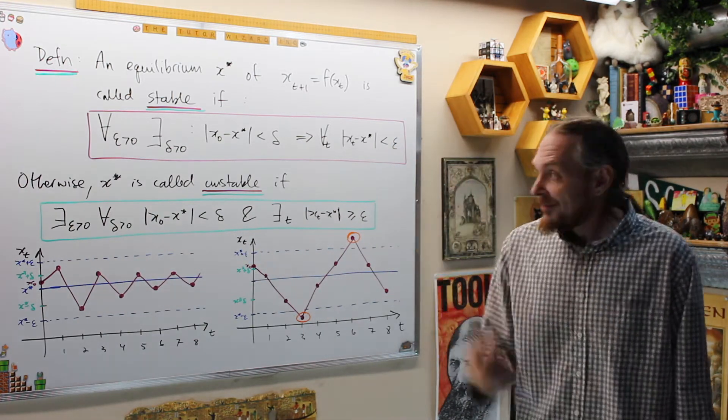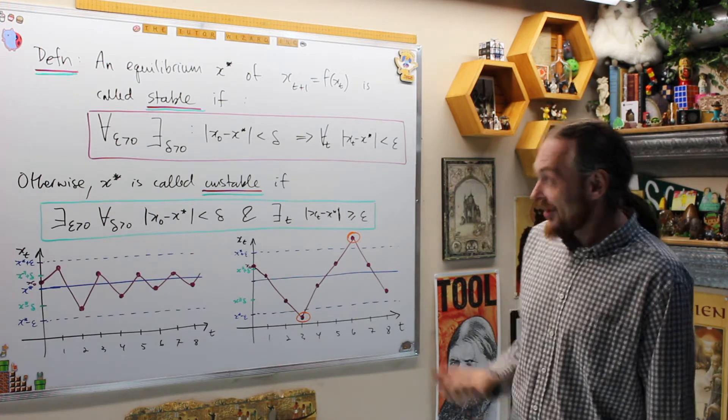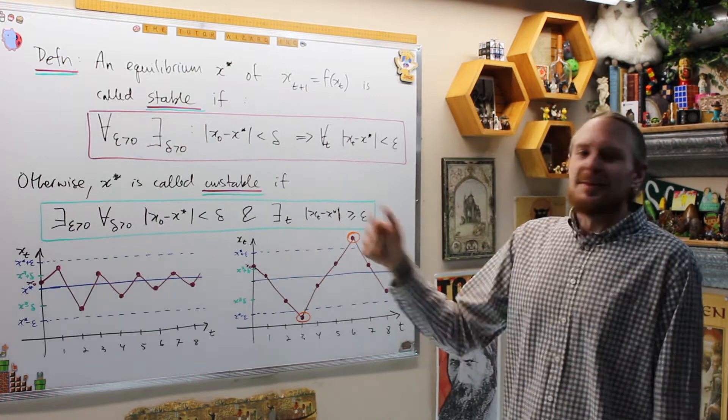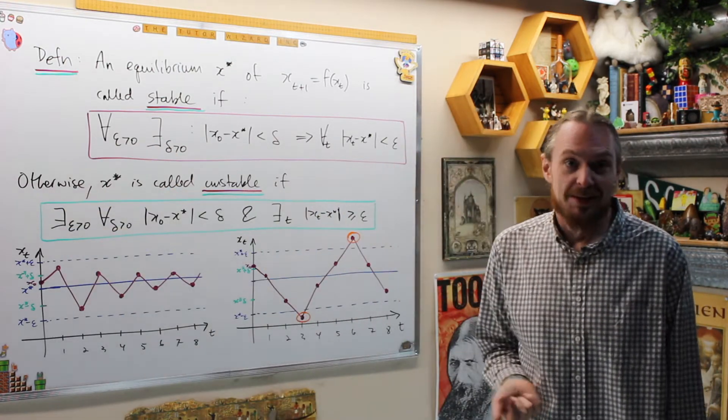And then, of course, I'm assuming you've seen some kind of predications or some logic course, because now how do I negate this statement? Lazily, in most books, they'll say otherwise. Otherwise, it's called unstable. But what does that mean?